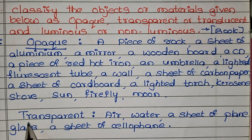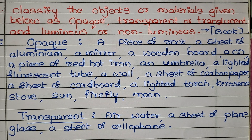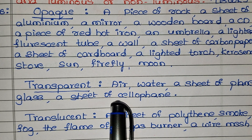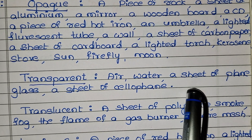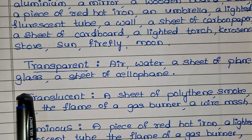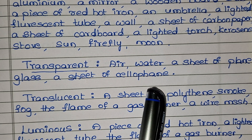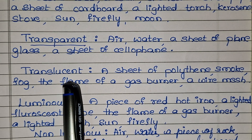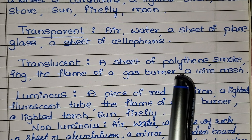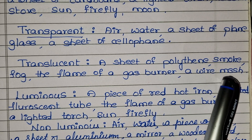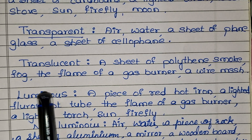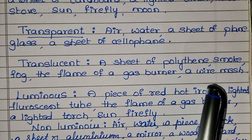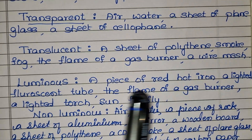Next: transparent — air, water, a sheet of plain glass, a sheet of cellophane. Translucent — a sheet of polythene, smoke, fog, the flame of a gas burner, a wire mesh.